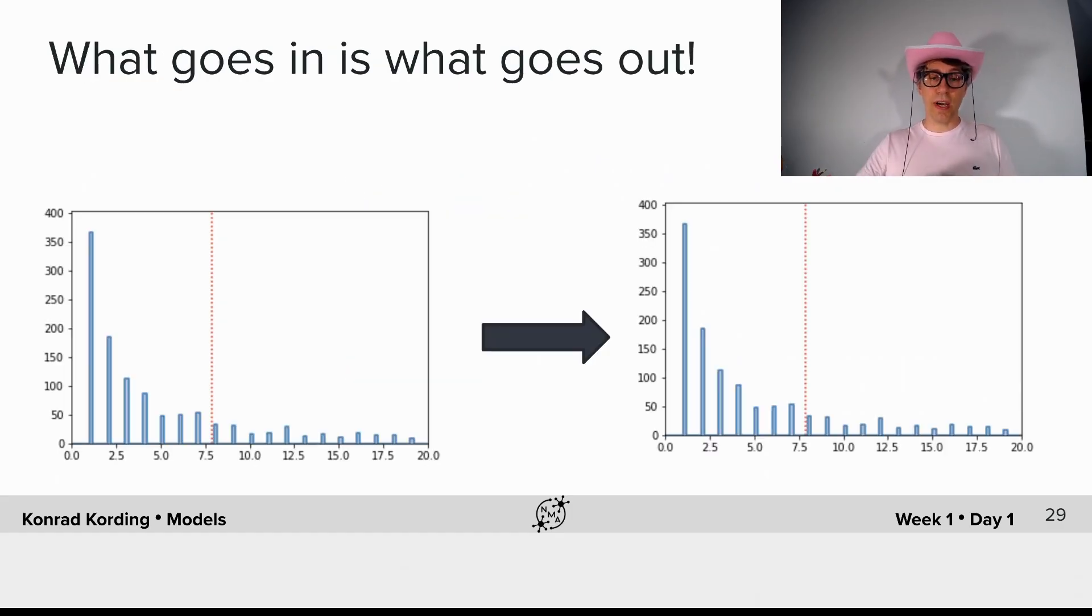What we find is a histogram that is very heavy-tailed and that in first order approximation looks like an exponential function. Now things make much more sense.